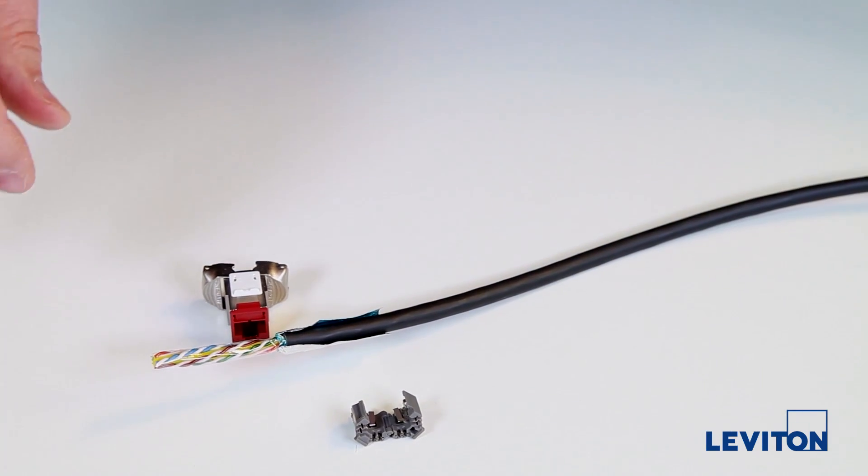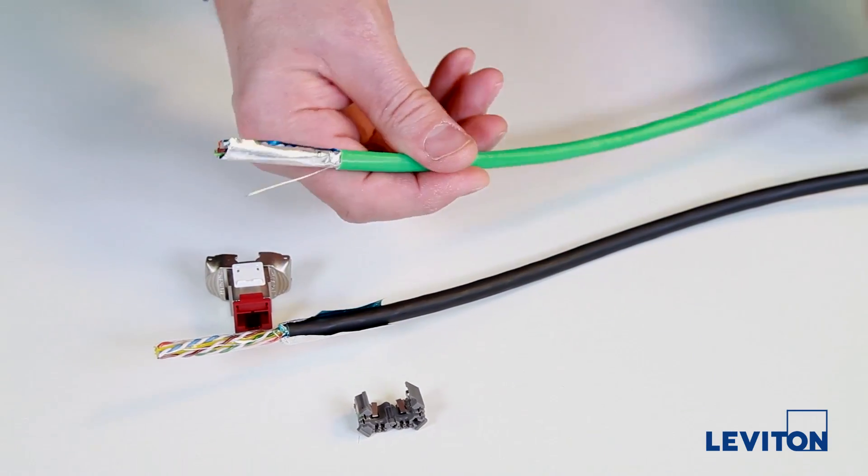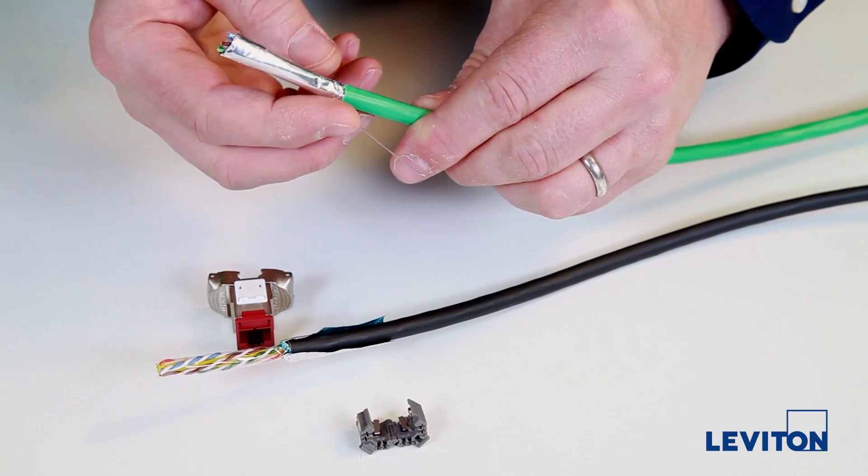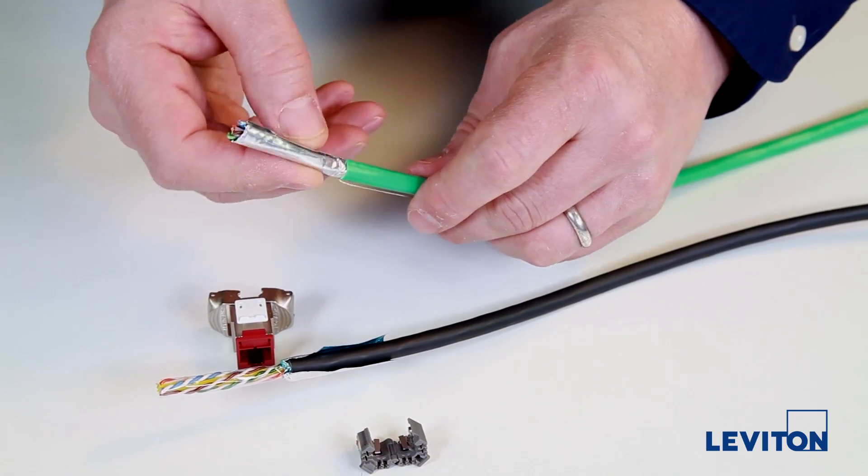For other cable constructions that are already metal side out, you will need to put a half twist in the foil before sparing it back. The metal side should be out in either case.